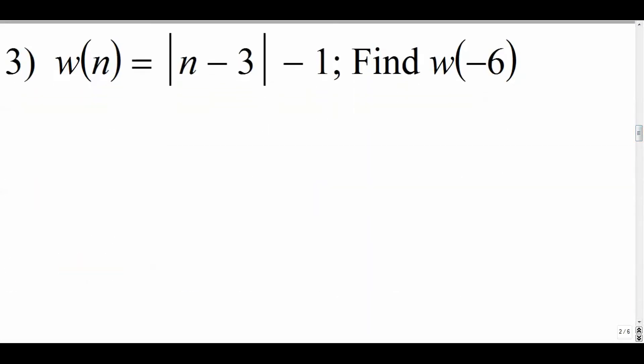Number 3: we have an absolute value function here. w of n equals the absolute value of n minus 3, and then a minus 1 at the end. So let's evaluate that for negative 6. Every time we see an n, this time we're going to put in a negative 6 and see what we get. So inside an absolute value we get negative 9, and absolute value turns everything to a positive, so that's 9 minus 1 which is just 8. So in this case our function w, when we plug in negative 6, we get 8.